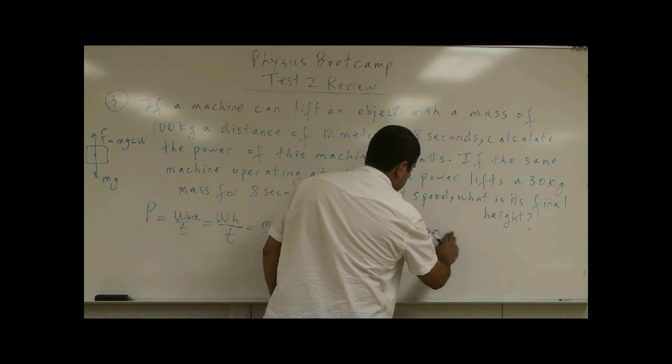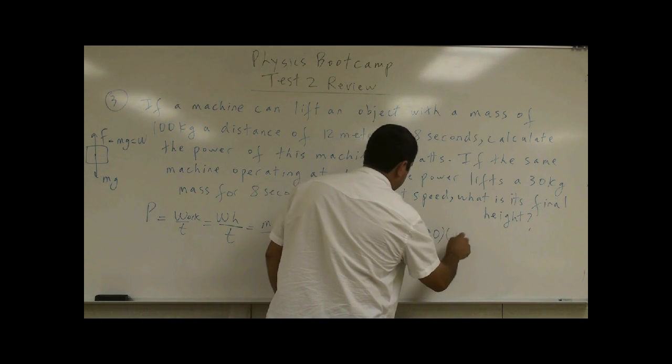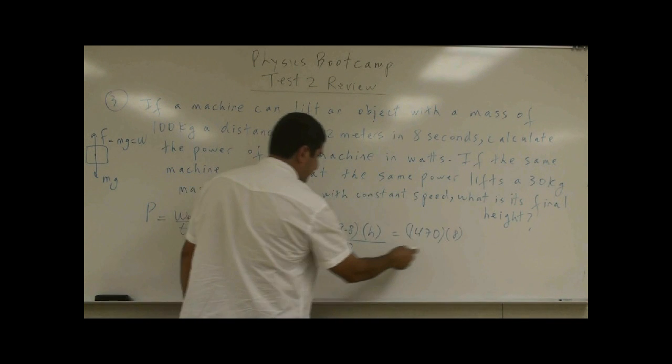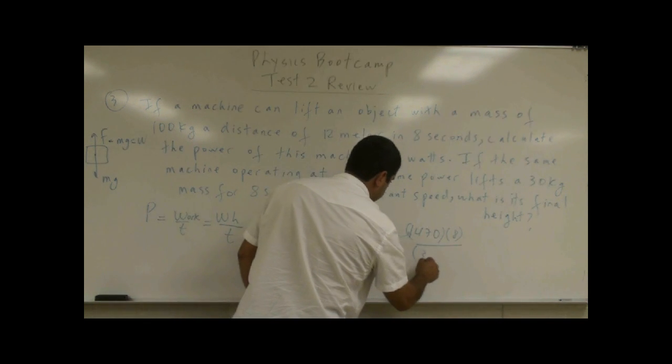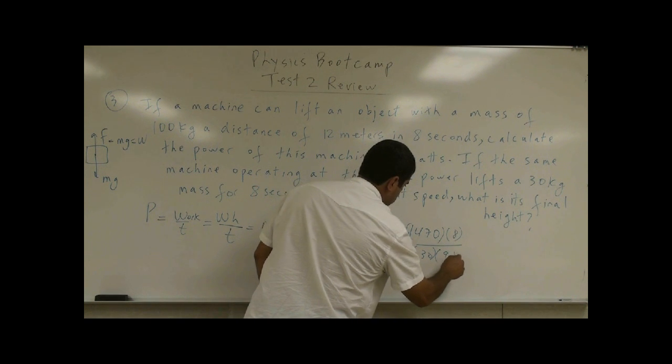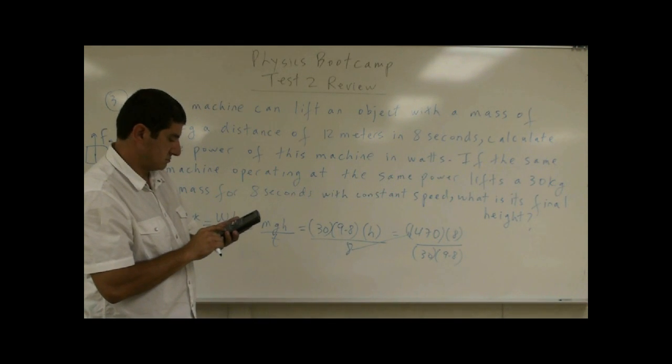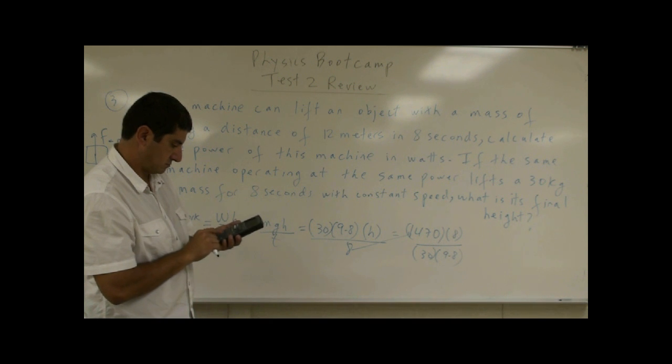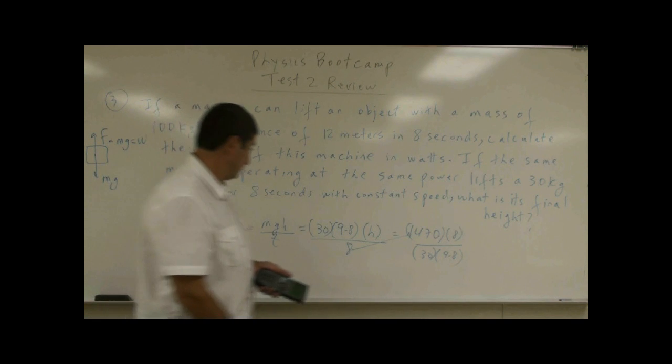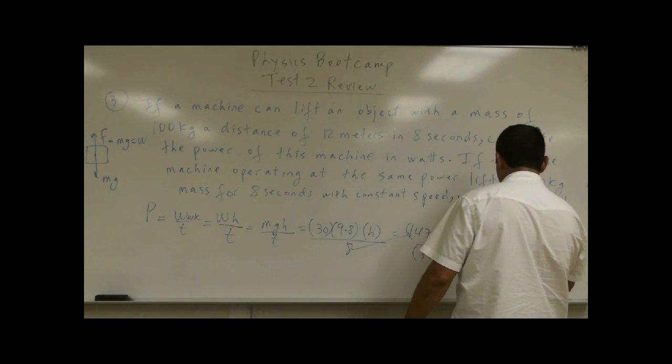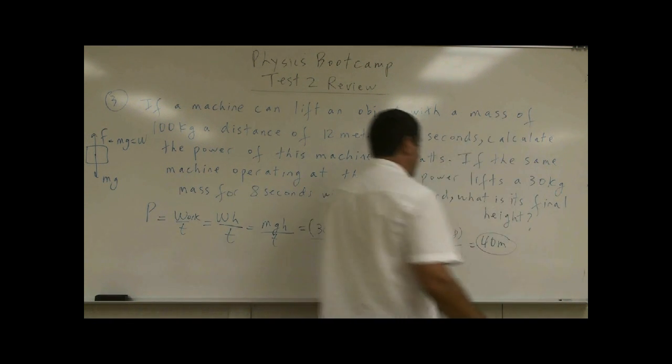So you basically have 8 times 1470 divided by, this goes over there, and then the 39.8 comes down. Which is 40.